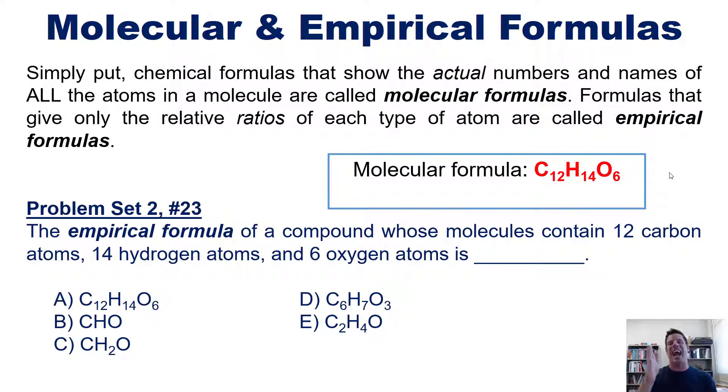Now that's not what this question asks us to do. It asks us for the empirical formula. Now remember, the molecular formula is the actual number of atoms of each type that there are in an individual molecule. An empirical formula is what happens if you take each of these numbers and divide them by whatever number you need in order to get to the smallest possible whole number ratio.